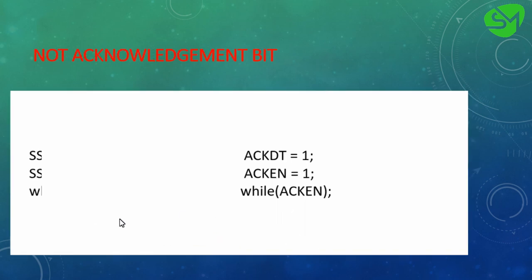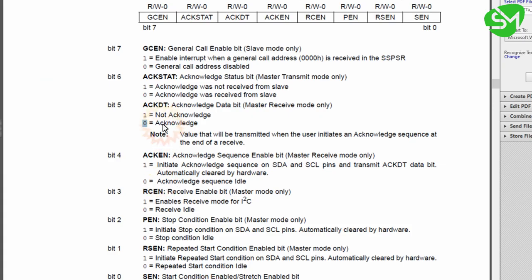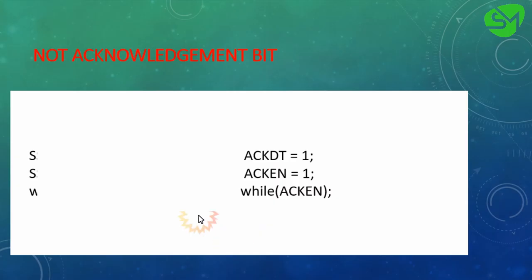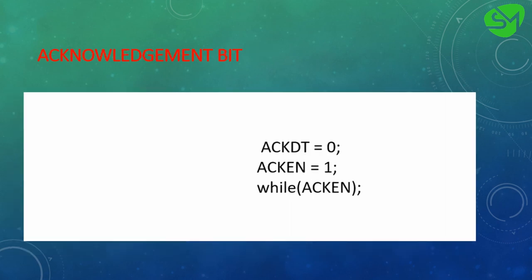For sending a not-acknowledgement the process is the same, except that we set the ACKDT bit from the SSPCON2 register. As mentioned, if ACKDT is 1 then a not-acknowledgement is sent. The remaining programming sequence lines are similar to the acknowledgement bit.